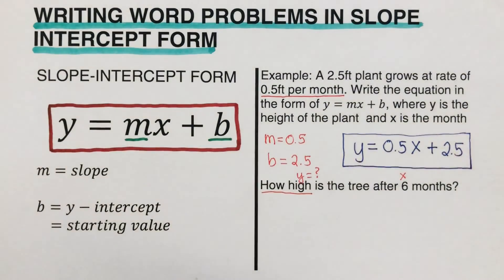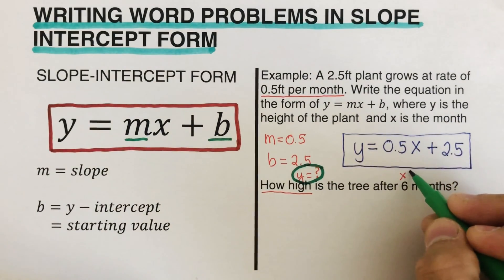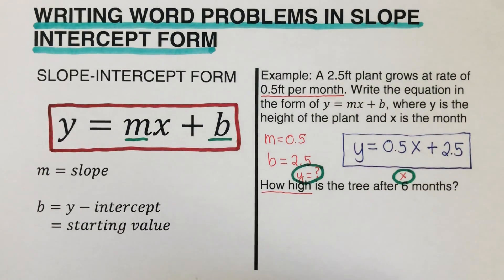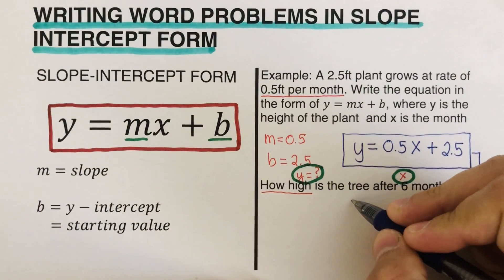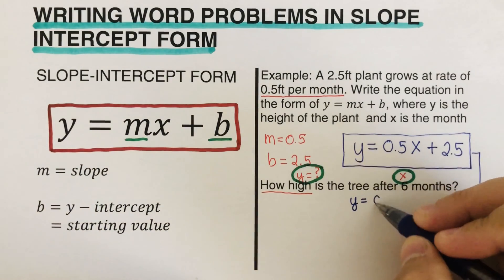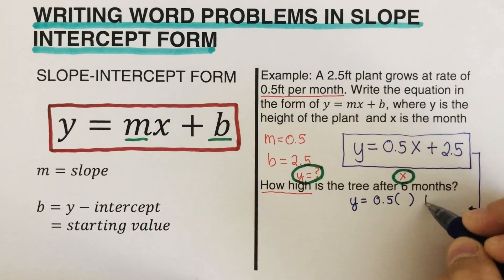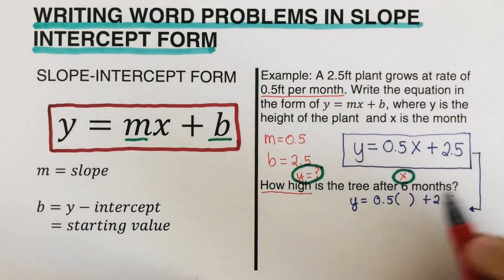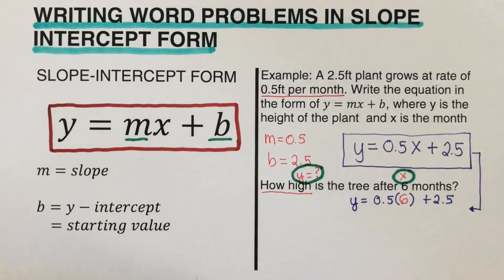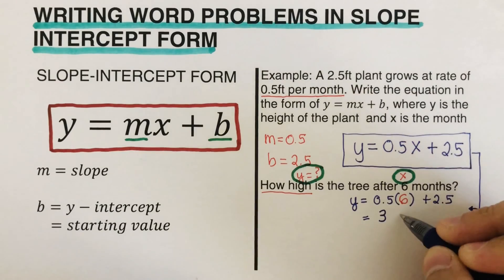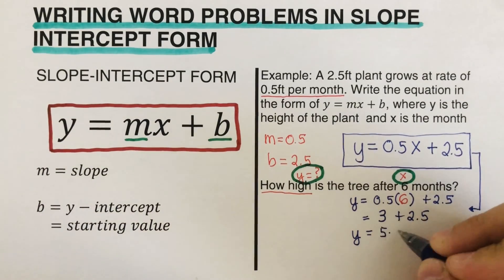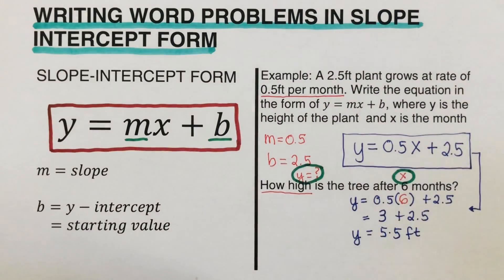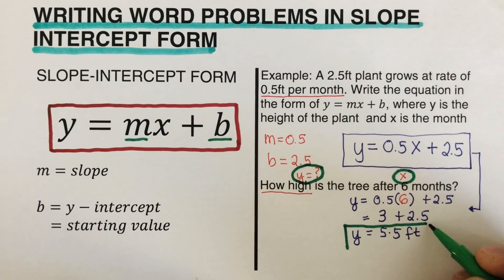Once we have determined what is missing and what is given, we plug it into the equation. We plug in 6 for x: y equals 0.5 times 6 plus 2.5. So 0.5 times 6 is 3, plus 2.5 gives us y equals 5.5 feet. This is the height of the plant after six months.